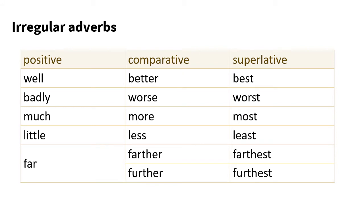Here, with irregular adverbs, we need to memorize them as you just see. You cannot understand, you need to memorize. The adverb well becomes better, the best. Badly, worse than, the worst. Much, more, the most. Little, less, the least. Far, farther, the farthest or further, the furthest.